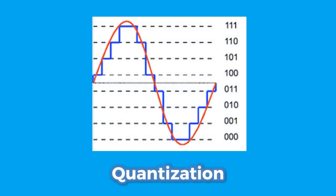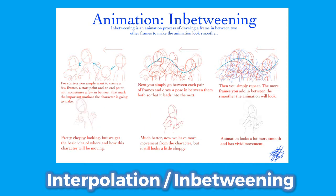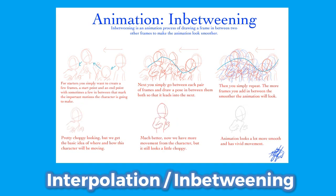Quantization is the mapping of a continuous analog signal to a finite amount of countable values, i.e., a digital signal. Interpolation, or in-betweening, is the filling of frames between keyframes to give the illusion of smooth motion between the frames.